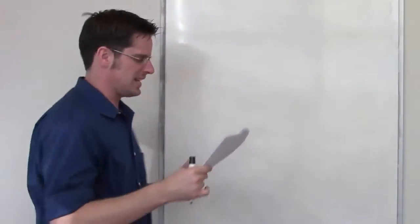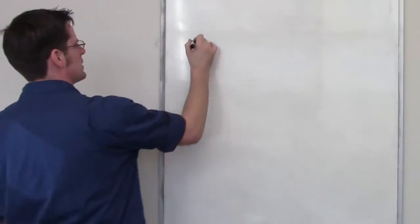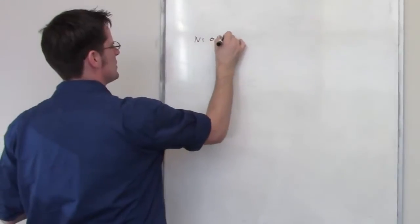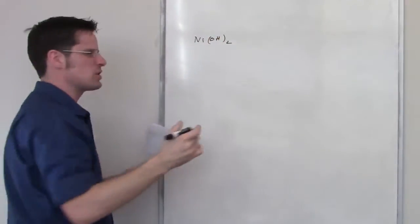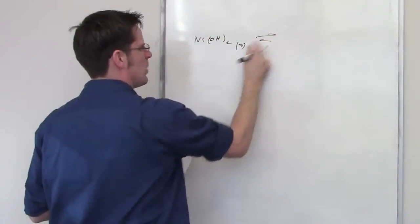Here's a problem that's very much like the last one. I've got nickel hydroxide. It's of course going to dissociate. It's not a very strong electrolyte, which means it's going to have a two-way arrow.